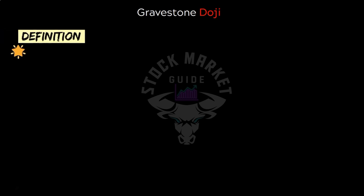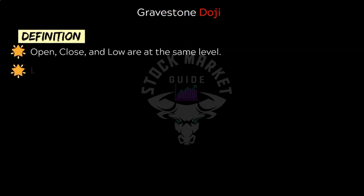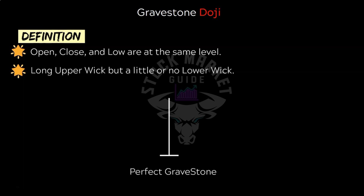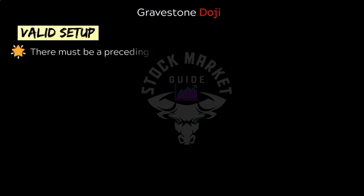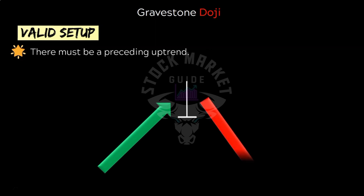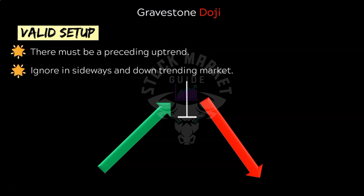The first one is gravestone doji. The gravestone doji is formed when the open, close, and low are at the same level, along with a long upper wick but little or no lower wick. Gravestone doji formation is very effective at the top of a trend and often results in market reversals, making it a bearish reversal pattern. You can ignore this doji in a sideways or downtrending market.